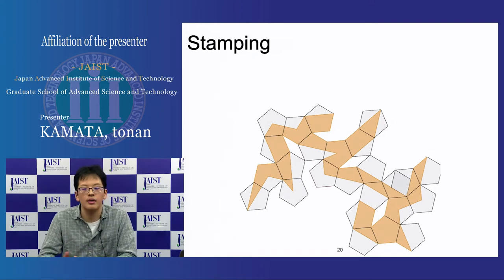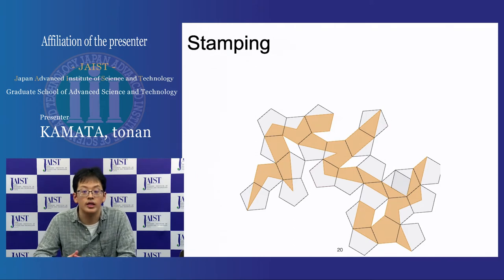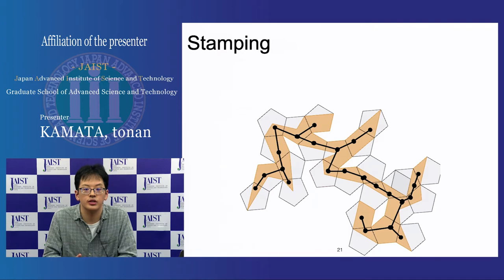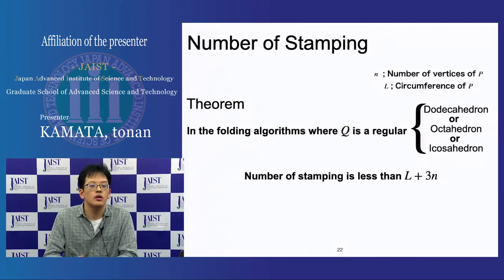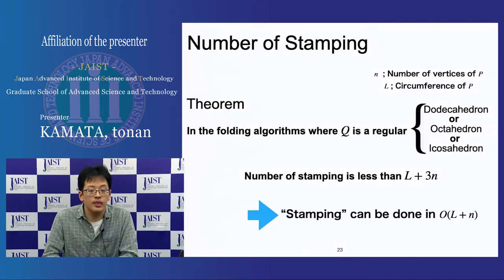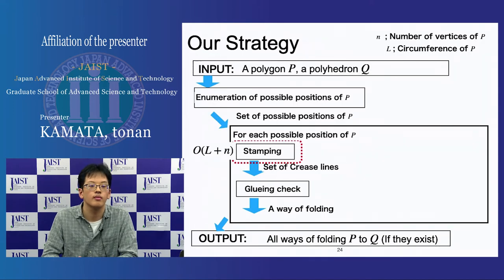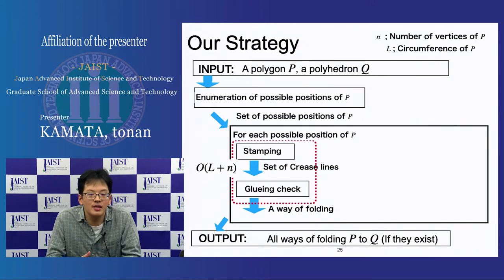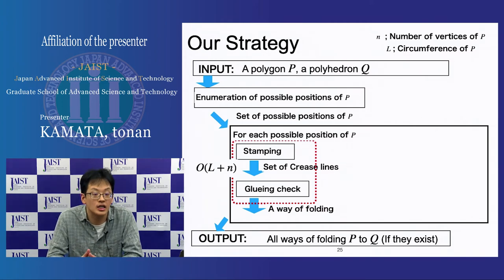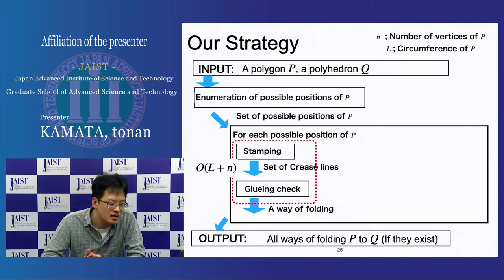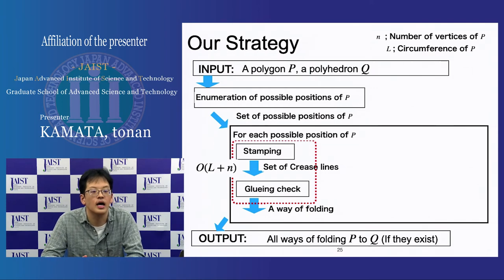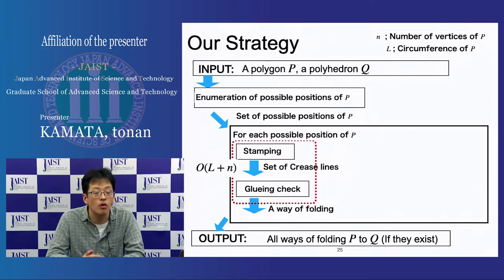By rolling the polyhedron along the edges of the polygon, we can find new crease lines. If the polygon can be folded to the polyhedron, the pieces of the polygon obtained by stamping induce a tree structure. By this theorem, the stamping operation can be done in O(L + N). The gluing check step can also be done in O(L + N).